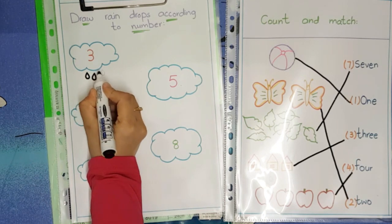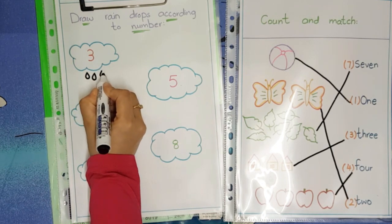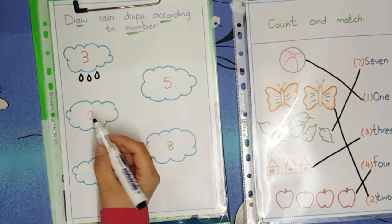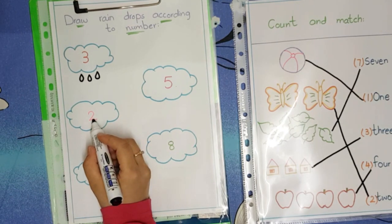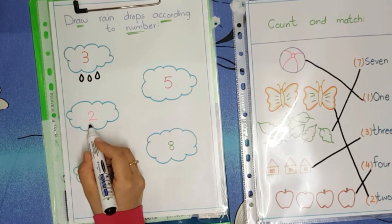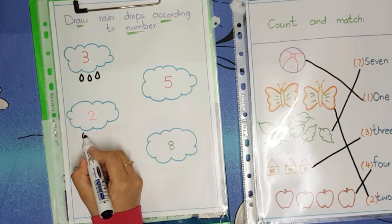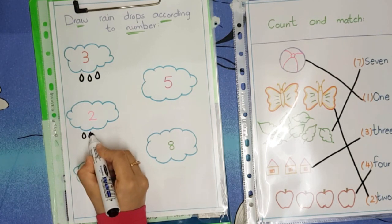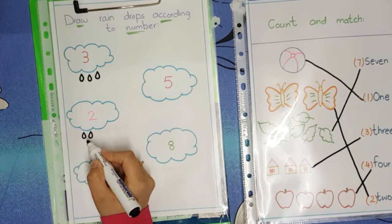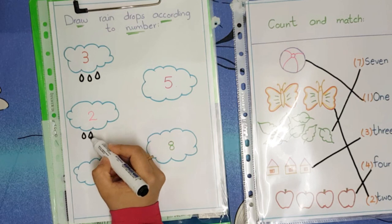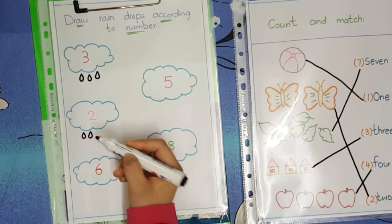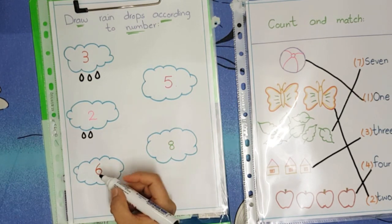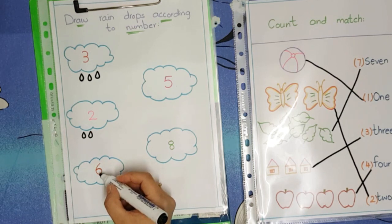Now move to cloud number two. We will draw two raindrops over here: one, two. Two raindrops for number two. Now we will move to the next cloud — we have number six in the cloud, so how many raindrops will we draw over here?